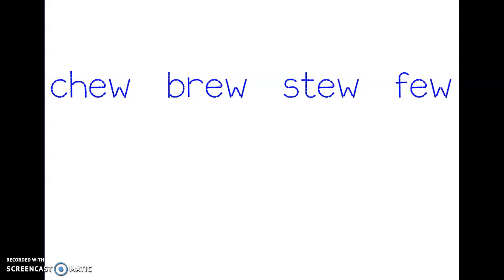There are two letters making the oo sound. Can you guess what they are? Good job, e and w. What do you think ew is? Right, this is a digraph.